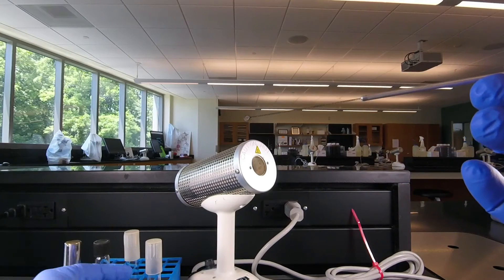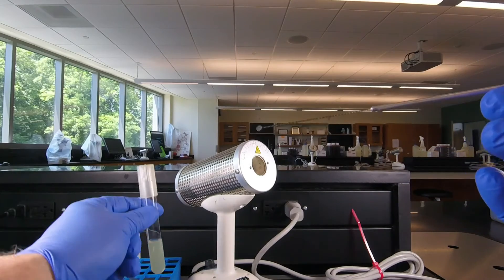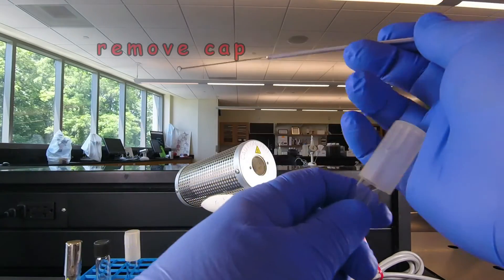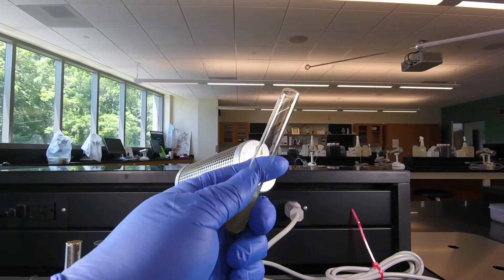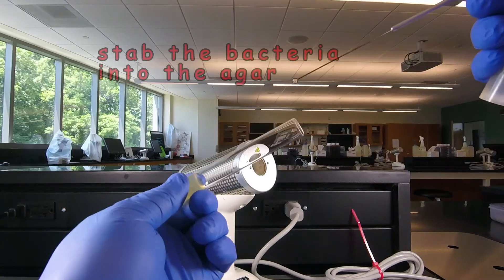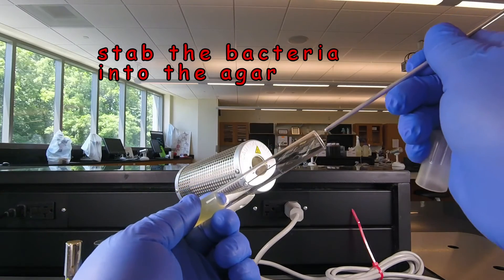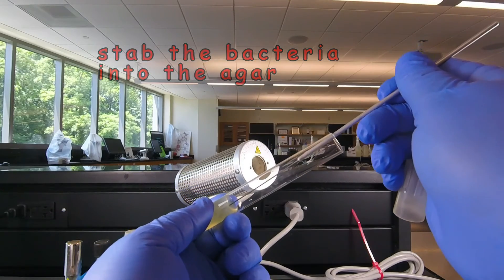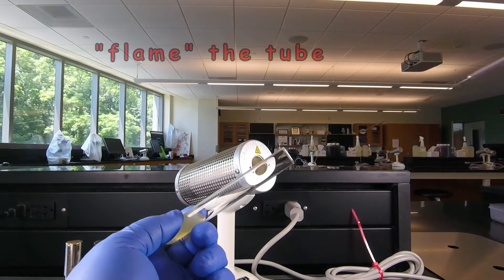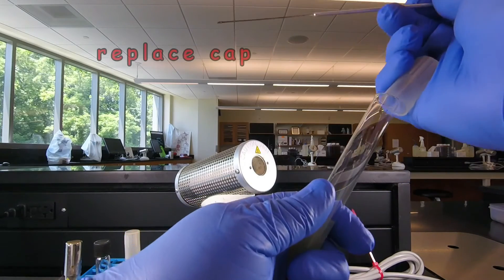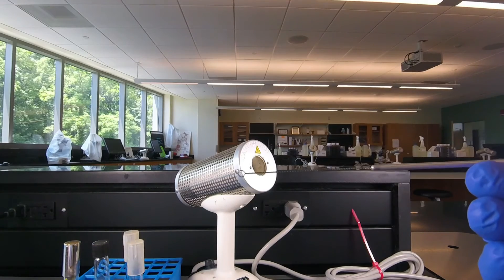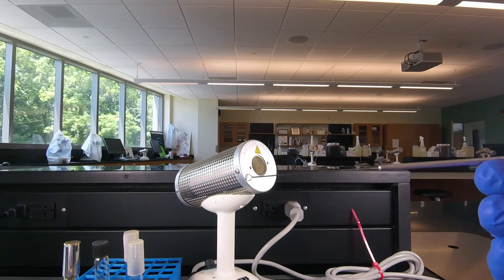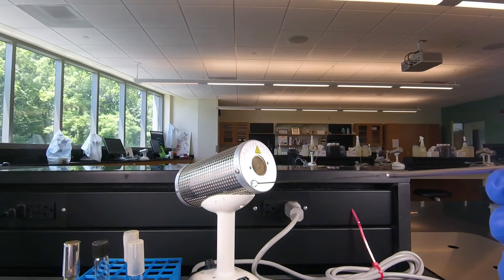Then pick up the stab tube. Remember pick it up by the glass not the cap. Remove the cap. Flame it for three seconds. And then we're going to stab right down the center of the tube about half to three quarters of an inch like that. Flame for three seconds and replace the cap. In this case we use a loop for the stab tube. Sometimes a straight wire is used instead of a loop.